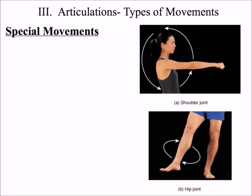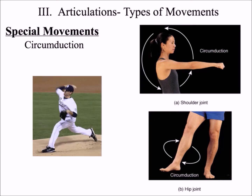Finally, there are special movements that occur in multiple planes. Circumduction is a conical or circular movement that occurs across different planes. An example of circumduction would be the motion of pitching a baseball.